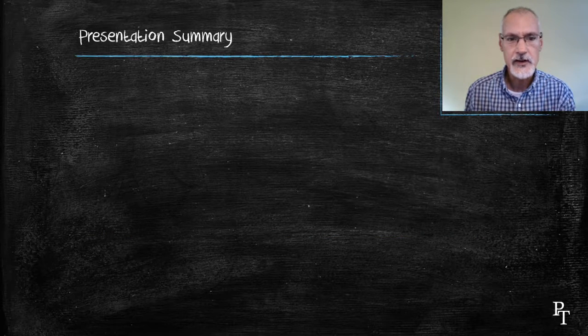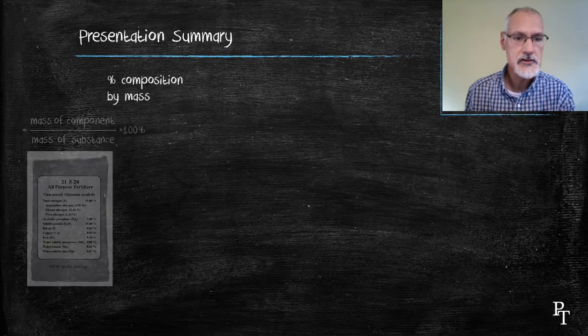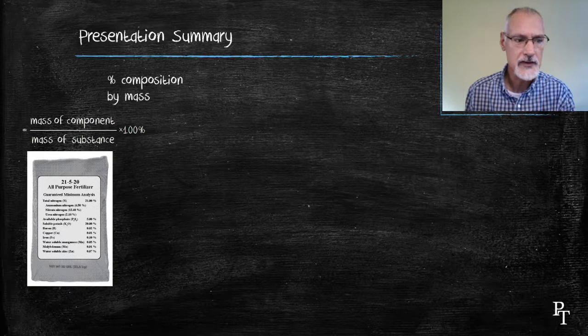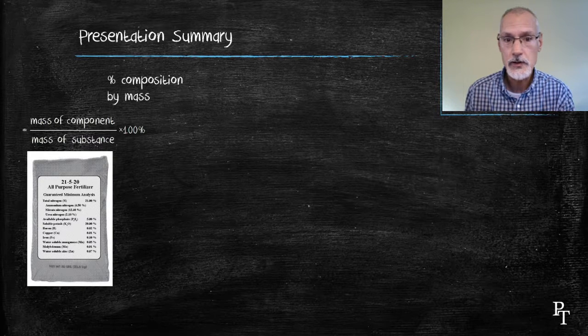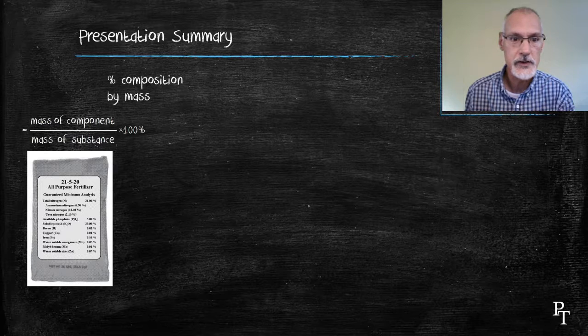We want to take us something called the percentage composition, which refers to the mass of the component over the mass of the substance, and that component could be an element, it could also be a compound.